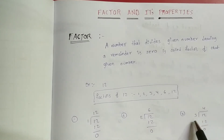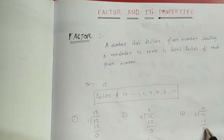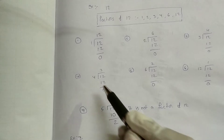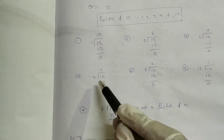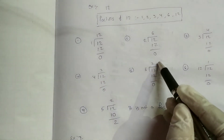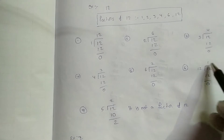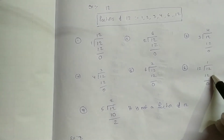Next, 3 divides 12. The remainder is zero, so 3 is a factor of 12. Also, 4 divides 12. The remainder is zero, so 4 is a factor of 12. And 6 divides 12. The remainder is zero, so 6 is a factor of 12.